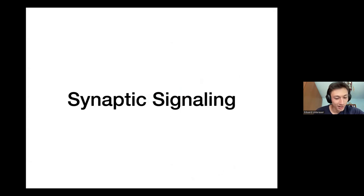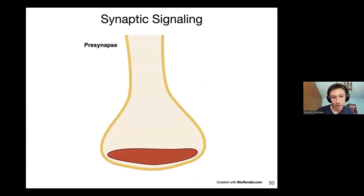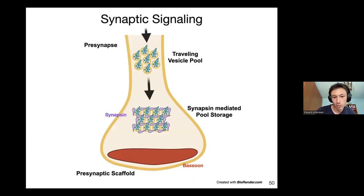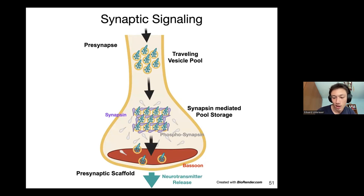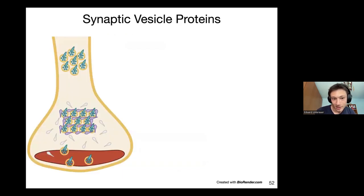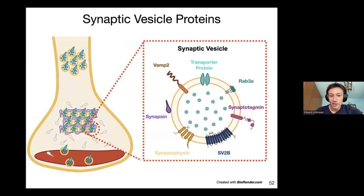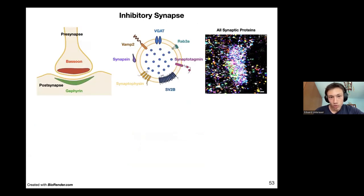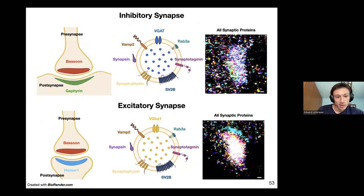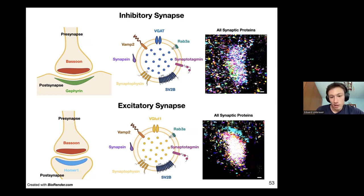Now I come to what interested me most: synaptic signaling. A quick reminder — the traveling vesicle pool is kept in storage mediated by Synapsin, and upon phosphorylation synaptic vesicle particles travel to the synaptic border and release neurotransmitter detected by the post-synaptic site. We looked into the proteins of the synaptic vesicle, and most remarkably we investigated differences between inhibitory and excitatory synapses. The most remarkable differences come from the post-synaptic scaffold — Gephyrin for inhibitory and Homer-1 for excitatory — and the neurotransmitter transporter proteins VGAT for inhibitory and VGluT1 for excitatory.